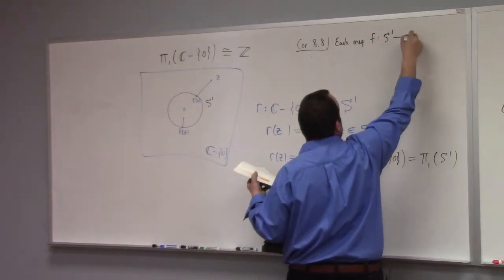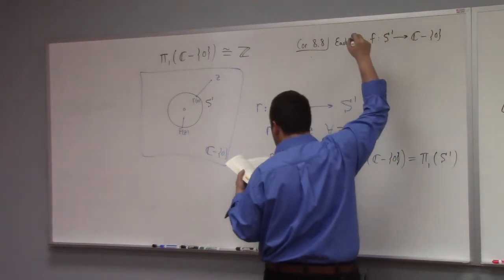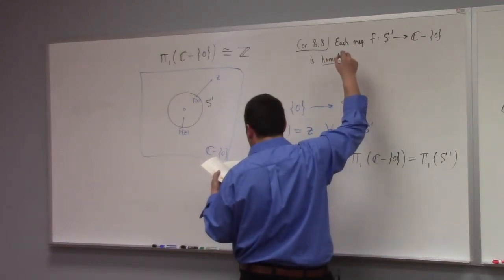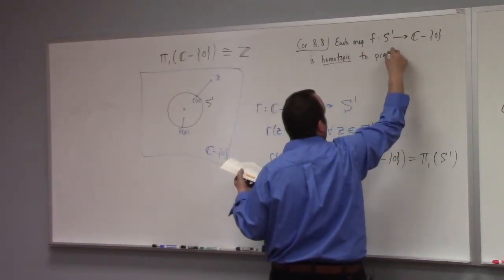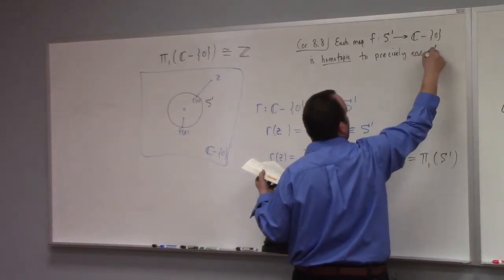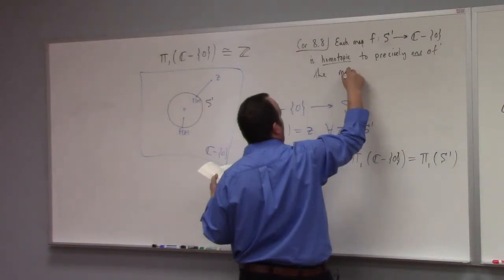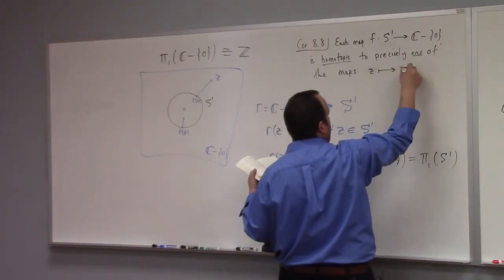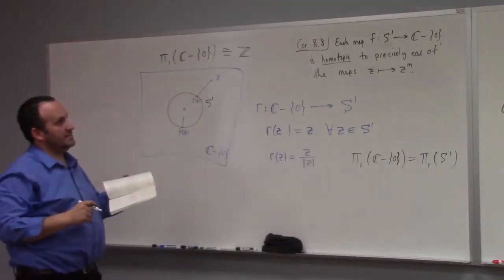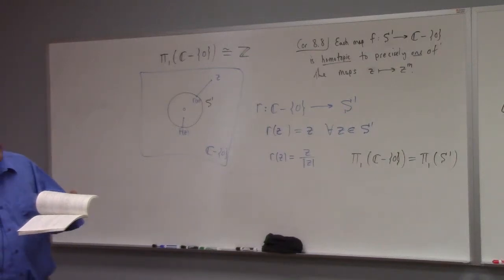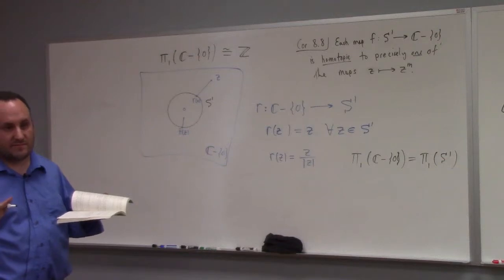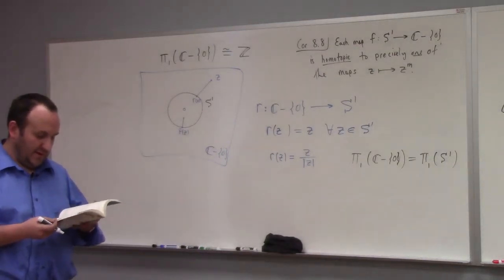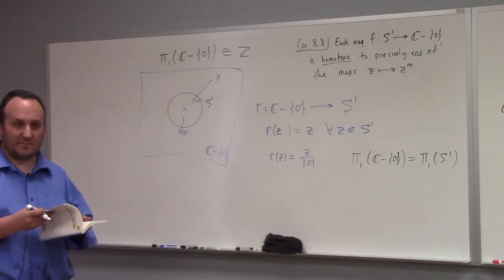Corollary 8.8 says: each map f from the circle into the punctured complex plane is homotopic to precisely one of the maps z ↦ z^m, and your choice of m is just the index of f — the winding number. It's a neat theorem, and then he proves an even neater theorem using this: the Fundamental Theorem of Algebra.